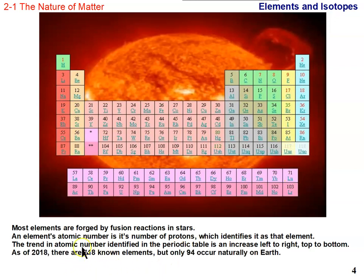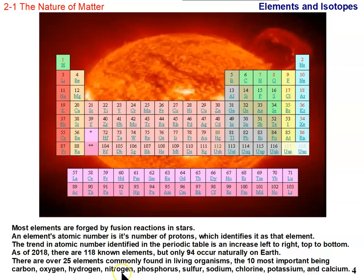As of 2018, there are 118 known elements, but only 94 occur naturally on Earth. In other words, the rest of them have to be forced into existence by chemists. There are over 25 elements found in living organisms, but there's a big 10 that makes up the vast majority of living things: carbon, oxygen, hydrogen, nitrogen, phosphorus, sulfur, sodium, chlorine, potassium, and calcium. Those are the big 10 that you'll find in your body.